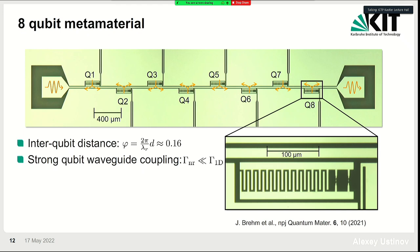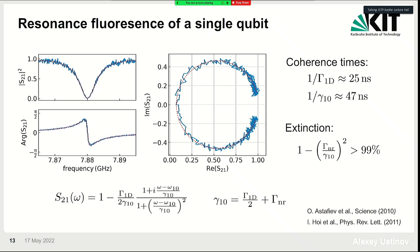This is our eight-qubit sample, with similar geometry as before. We chose the inter-qubit distance to be about 400 microns, corresponding to inter-qubit spacing at the frequency of interest that is smaller than the wavelength — so we are in the metamaterial limit. All qubits, in contrast to the 90-qubit device, now have individual control lines, so we can run current through each qubit independently to change the flux in the SQUID loop and thereby individually control the frequency of every qubit in the array.